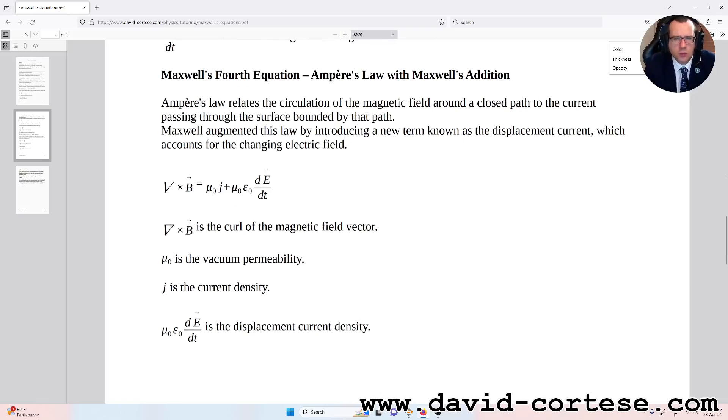Maxwell's fourth equation: Ampere's law with Maxwell's addition. Ampere's law relates the circulation of the magnetic field around a closed path to the current passing through the surface bounded by that path. Maxwell augmented this law by introducing a new term known as the displacement current, which accounts for the changing electric field. Nabla vector product B equals mu zero times j plus mu zero times epsilon zero times dE over dt.